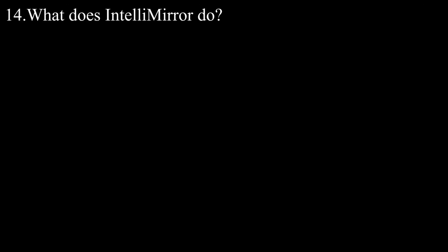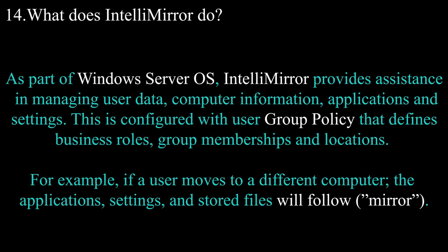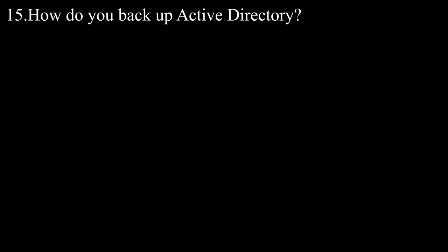Question number fourteen: what does IntelliMirror do? As part of the Windows operating system, IntelliMirror provides assistance in managing user data, computer information, applications, and settings. This is configured with user group policy that defines business roles, group members, and locations. For example, if a user moves to a different computer, the applications, settings, and stored files will follow.